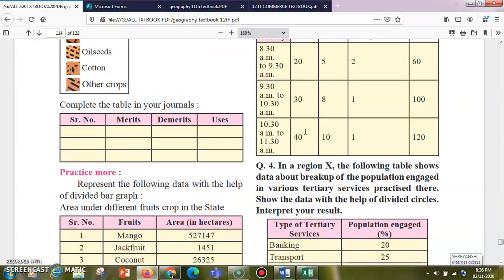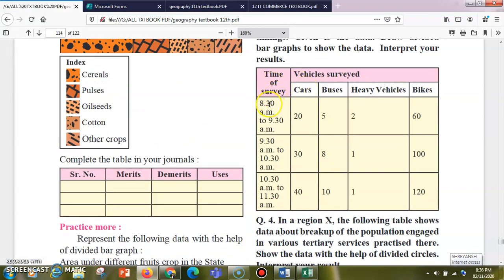Now here the table is quite different. You can see here there are some timings like 8:30 to 9:30, 9:30 to 10:30, and 10:30 to 11:30. So these are the timing slots and you have this data like cars were 20 between 8:30 to 9:30, then it was 30 between 9:30 to 10:30. This is how the data is interpreted.